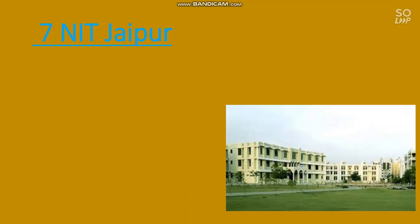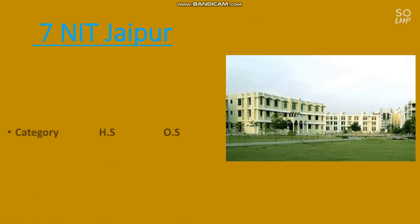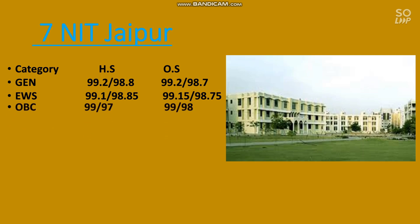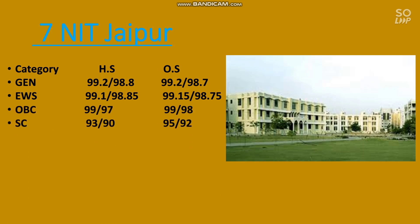The next one is number 7. The cutoff for the EC branch is: General — 99.2 percentile, EWS — 99.15, OBC — 99, SC — 95, and ST — 93 percentile required.